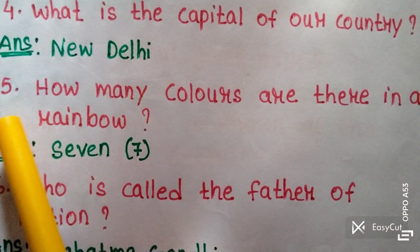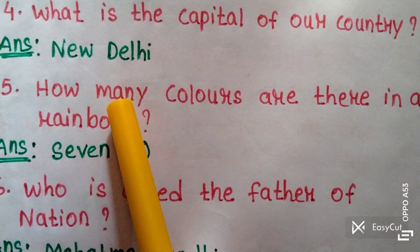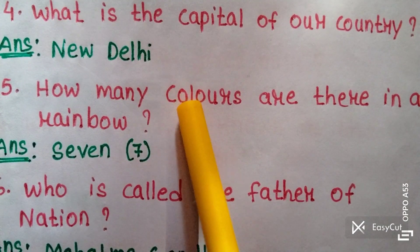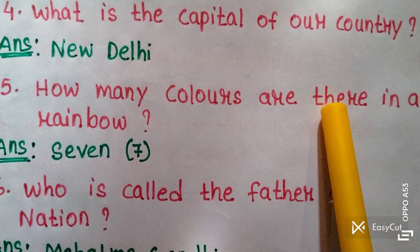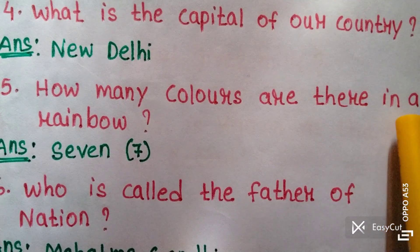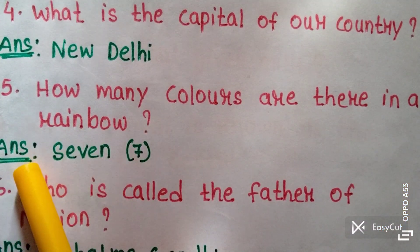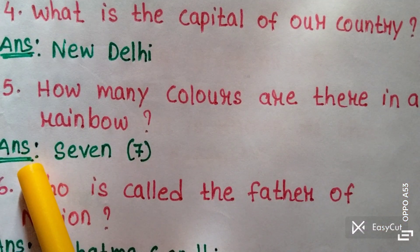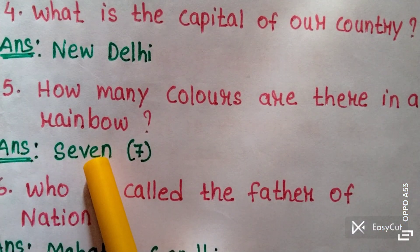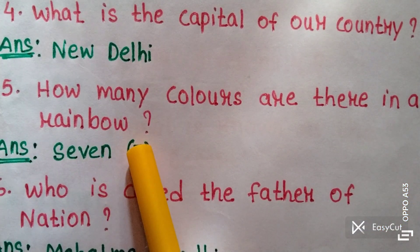Question five: How many colors are there in a rainbow? Answer: Seven colors.